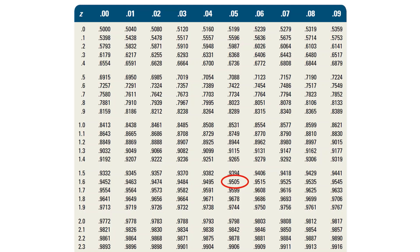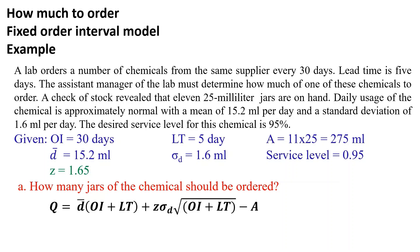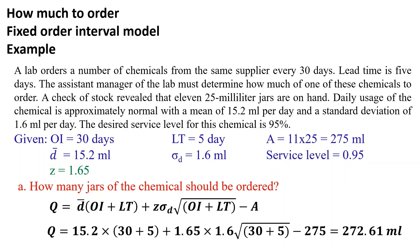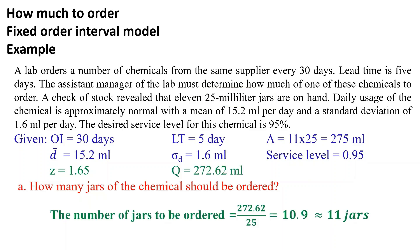Start with finding the Z value corresponding to a service level of 0.95 from the table. The Z value is 1.6 + 0.05 = 1.65. To solve the first question and find the number of jars of the chemical to be ordered, substitute into the equation with the given values. This results in Q = 272.62 mL. Since each jar contains 25 mL, this value should be divided by 25. Consequently, the number of jars to be ordered equals 272.62 ÷ 25 = 10.9, approximately equal to 11 jars.